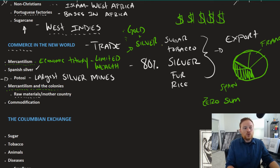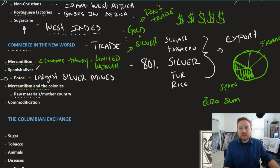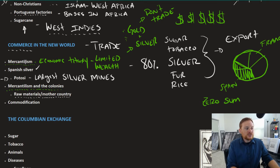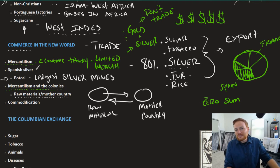Because you're trying to hoard all the gold and silver, you don't trade with each other — you especially don't buy things from other countries. Spain, France, Portugal, and England don't trade with each other. This creates an incredibly competitive economy in the New World. In terms of the relationship between the colonies and the mother country, mercantilism states that any raw material must only be traded with the mother country. If Spain produces silver or France gets furs, there's only one place that goes: to the mother country.